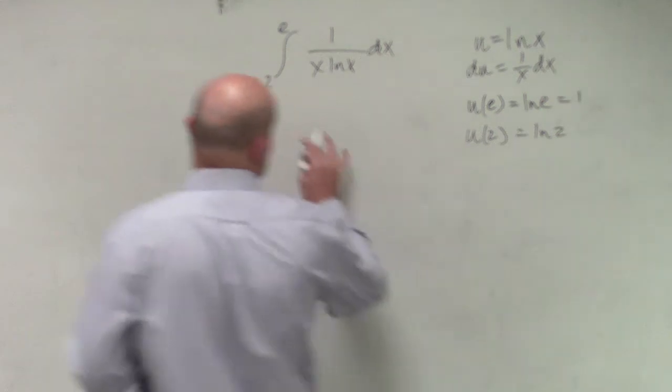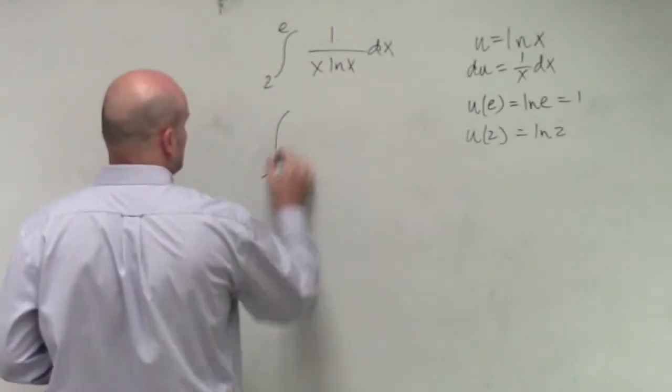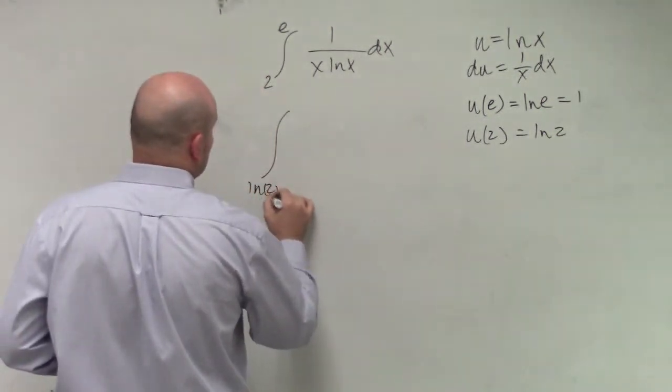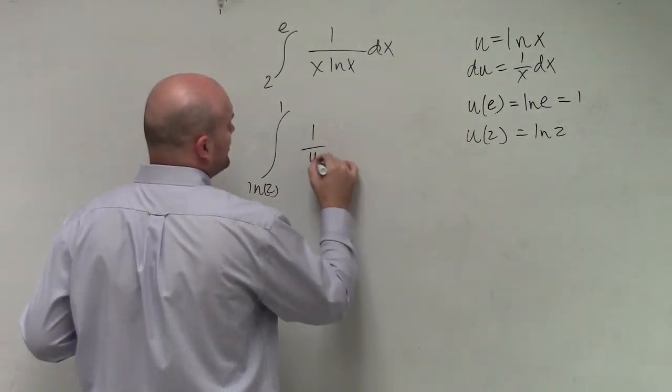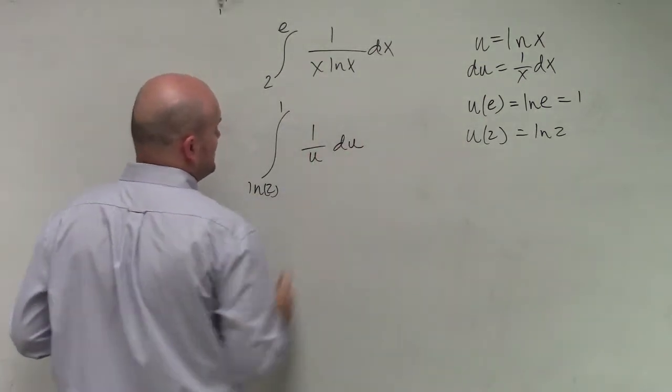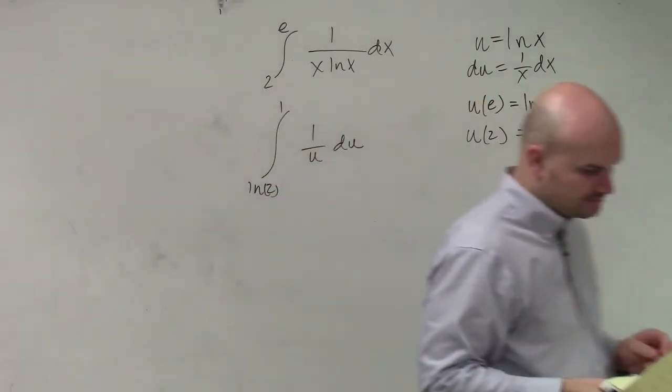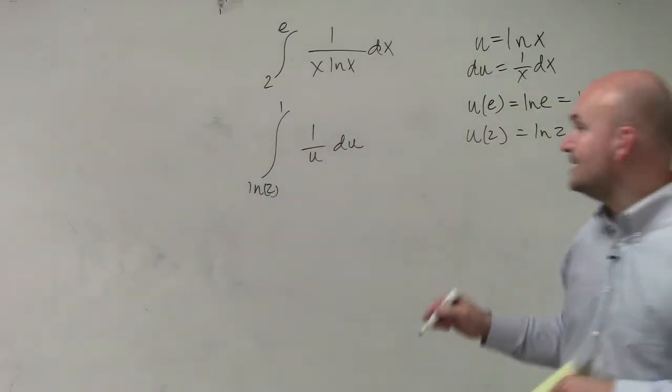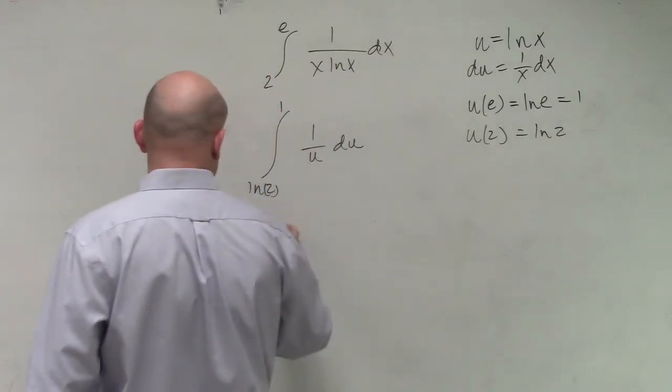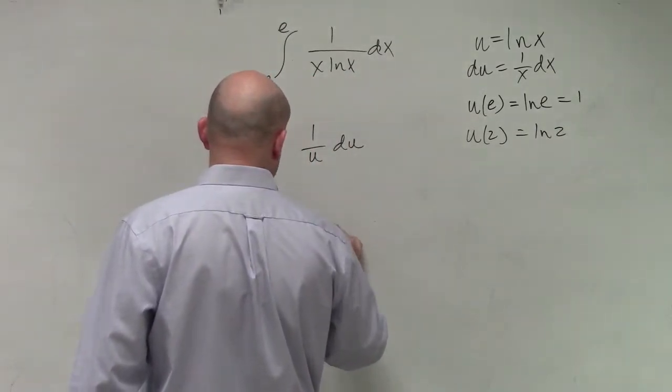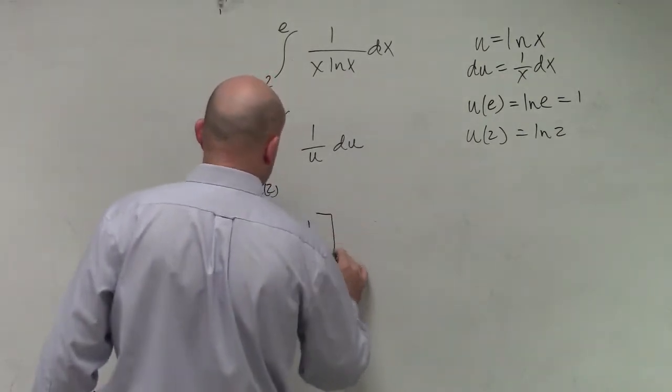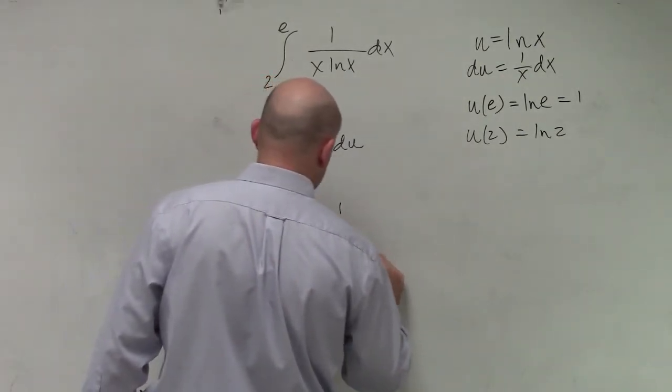So now what I'm going to do is I'm going to replace this from ln of 2 to 1, and then I have 1 over u du. So now I can integrate this to ln of u from 1 to ln of 2.